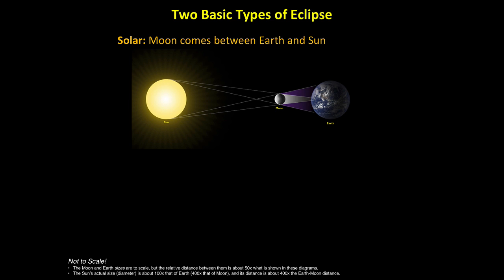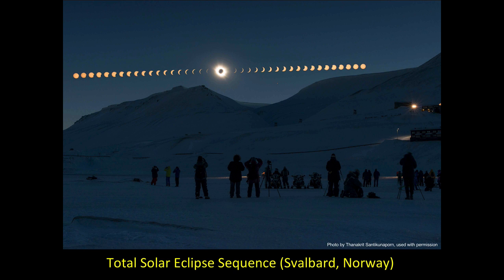There are two basic types of eclipses. A solar eclipse, like the one of August 21, 2017, occurs when the Moon comes between Earth and the Sun, so that the Moon's shadow falls on Earth. If you are lucky enough to witness a total solar eclipse, you'll see the Moon gradually block more and more of the Sun, and for up to a few minutes it will completely cover the Sun's visible surface, allowing you to see the faint light of the Sun's outer atmosphere, or corona.